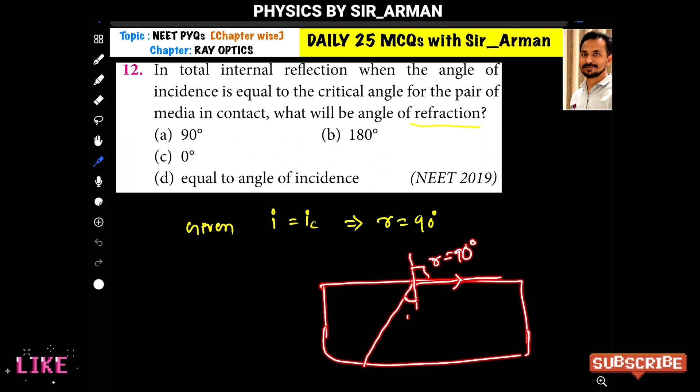At that time, the angle of incidence is called the critical angle, that is IC. Hence, the angle of refraction is 90 degrees.